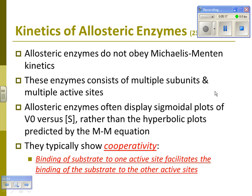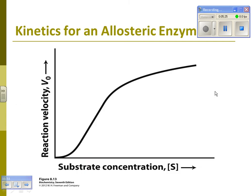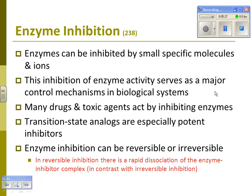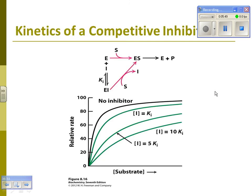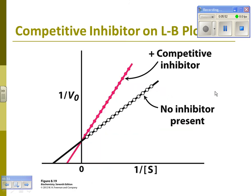Know that allosteric enzymes do not obey the Michaelis-Menten equation or MM kinetics — they function differently. Also know that substrates bind at the active site, so if you're going to inhibit an enzyme you can do it competitively, right in there; uncompetitively; or non-competitively, which is somewhere else entirely. We're going to come back to that, so keep it in mind.